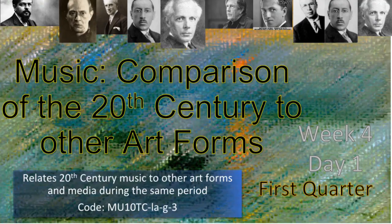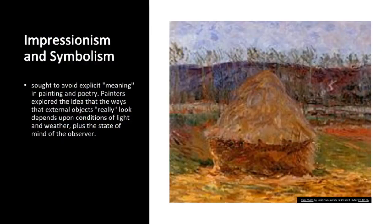Music: Comparison of the 20th Century to Other Art Forms, Week 4, Day 1 — Relates 20th Century Music to Other Art Forms and Media During the Same Period. Impressionism and Symbolism sought to avoid explicit meaning in painting and poetry. Painters explored how external objects appear depending on conditions of light, weather, and the state of mind of the observer. Poets sought to write poems rich in ambiguous imagery. Composers, most notably Claude Debussy, sought to translate these ideals into musical expression. Impressionism is principally a French phenomenon, although Spanish, Italian, and American composers contributed important examples.